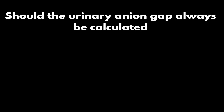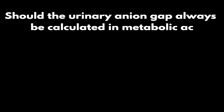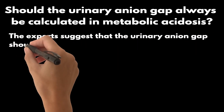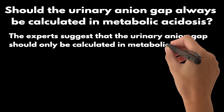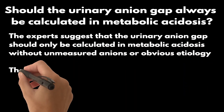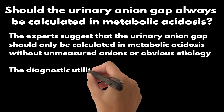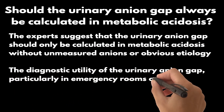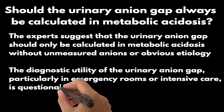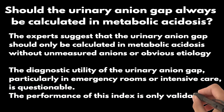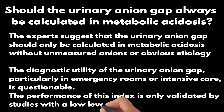Should the urinary anion gap always be calculated in metabolic acidosis? Experts suggest that the urinary anion gap should only be calculated in metabolic acidosis without unmeasured anions or obvious etiology. The diagnostic utility of the urinary anion gap, particularly in emergency rooms or intensive care, is questionable, and its performance is only validated by studies with a low level of evidence.